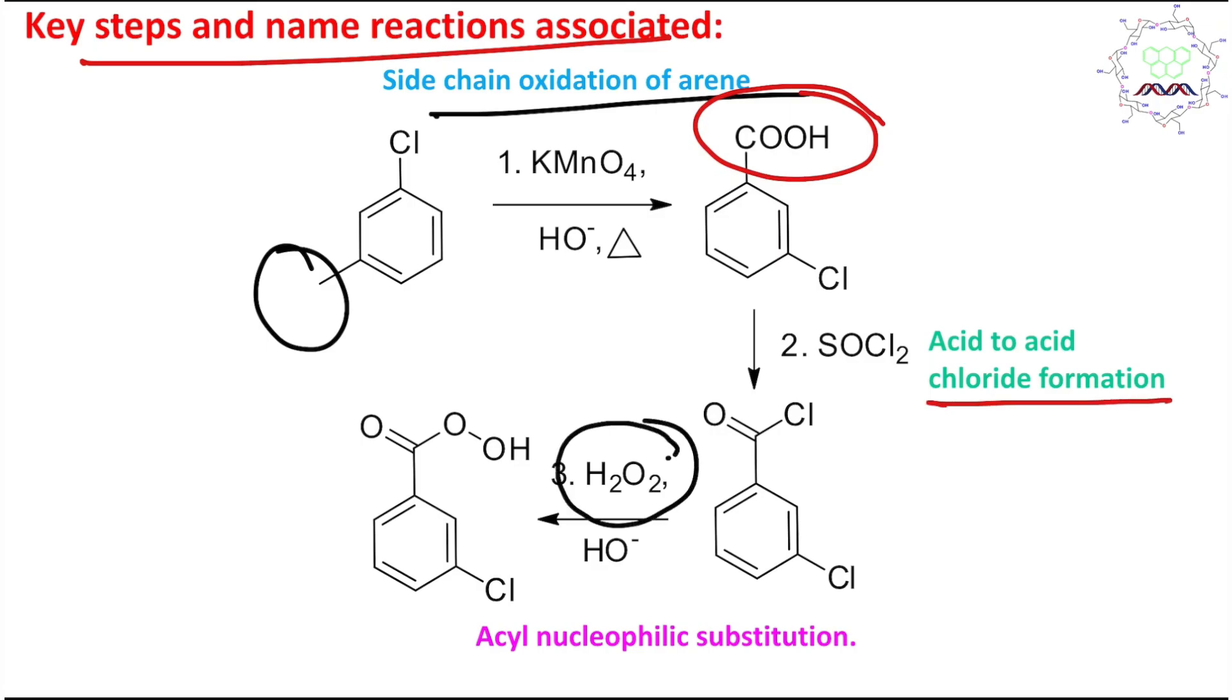In this case these O-O bond is peroxy linkage because the oxidation state of this oxygen is -1, and this mCPBA molecule shows its oxidizing capability because of this peroxy bond.